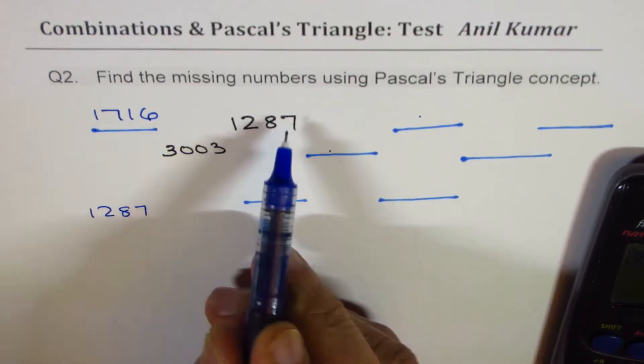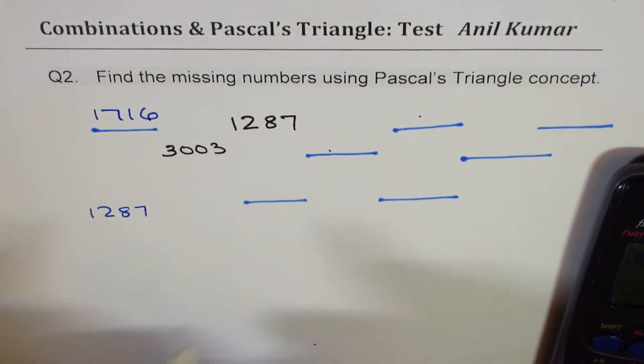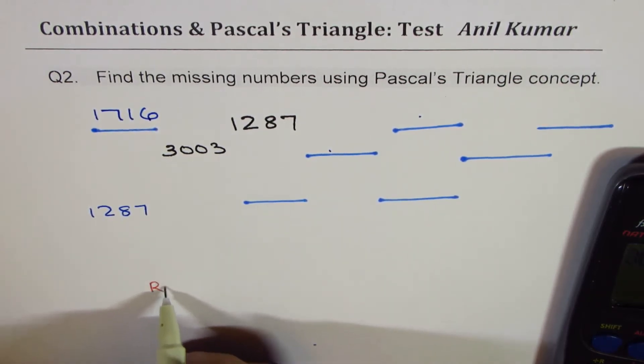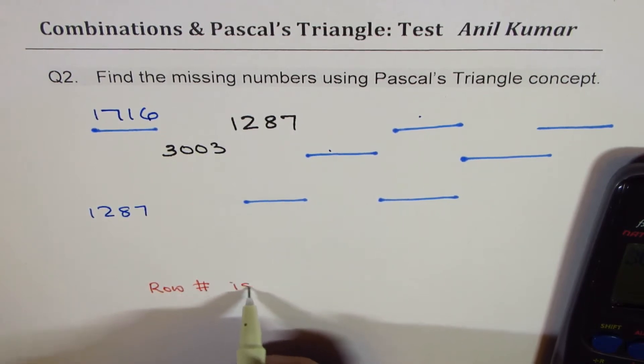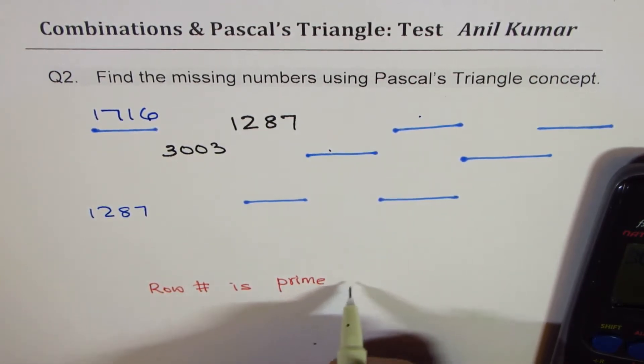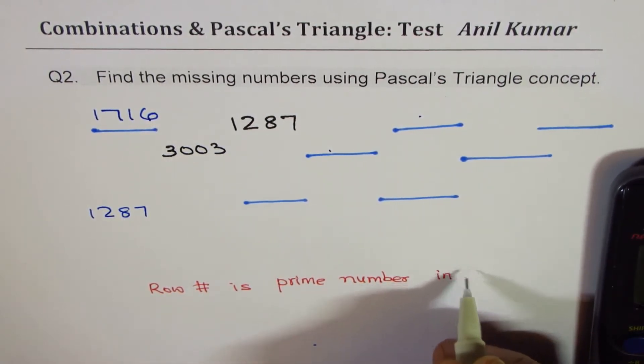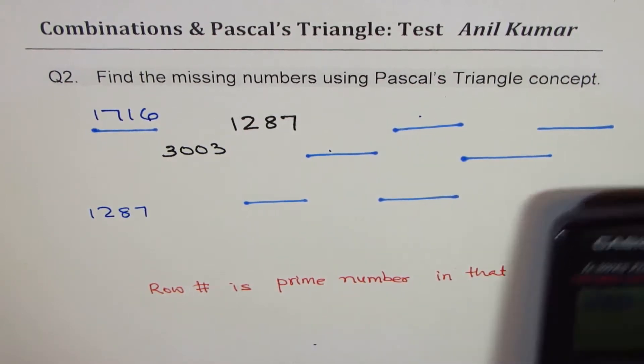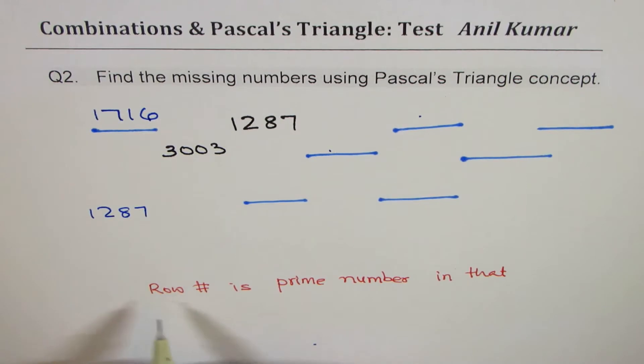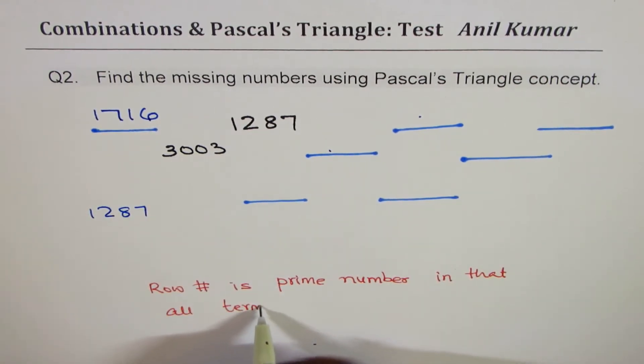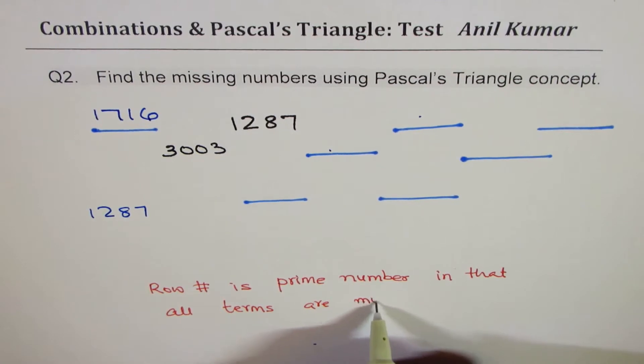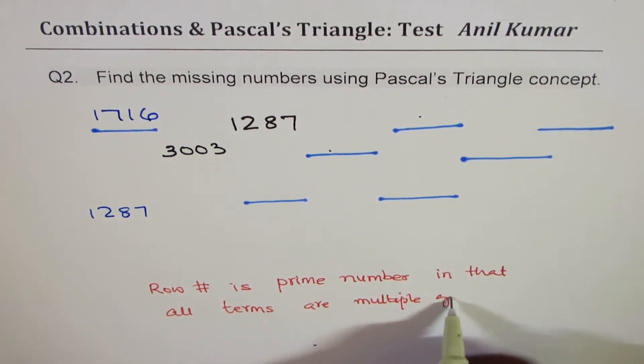Now if you know there is a property which says that if there is a prime number in a row, if the row number is prime number in that case, what is the property? If row number is prime, let's say if the row number is 5, then in that case all terms are multiple of that prime number.